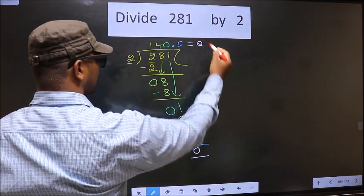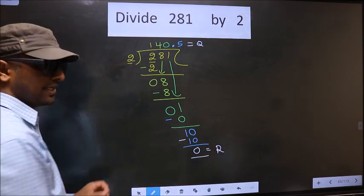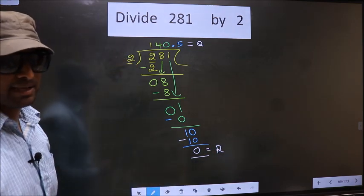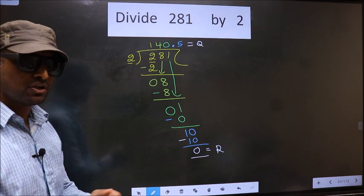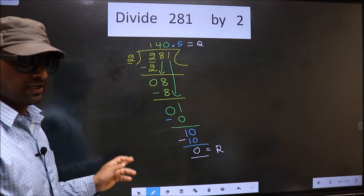So this is our quotient, and this is our remainder. Did you understand where the mistake happens? You should not do that mistake. Am I clear?